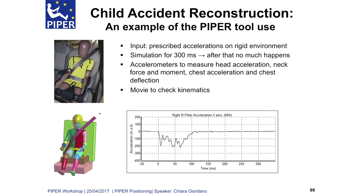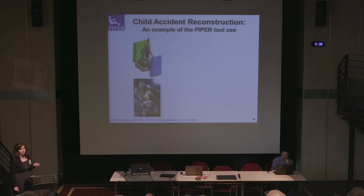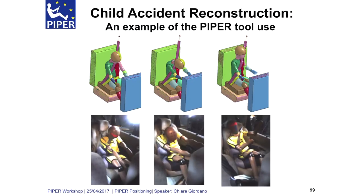We are now going to run the simulation. As input, we have prescribed accelerations — X, Y, and Z — on the rigid part of the environment. Simulations run for 300 milliseconds; not much happens after that. As I explained this morning, we have sensors implemented into the model. We will look at accelerometers to measure head accelerations, neck forces and moments, chest acceleration, and chest deflections, and compare those to the dummy. We also have movies to check the kinematics. I will quickly show some of the performances for this accident reconstruction.